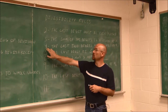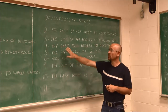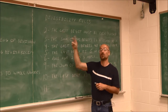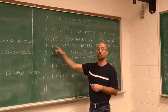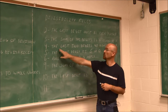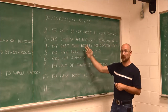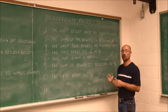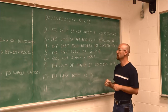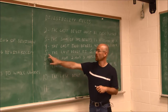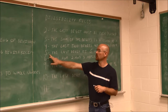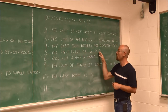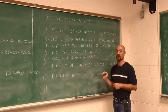For our divisibility rule of 4, we could think of it in two ways. It would have to be divisible by 2 twice because 4 is 2 times 2. But the rule says the last two digits of the number must be divisible by 4. If the last two digits are divisible by 4, then the whole number is divisible by 4. For 5, it's a simple rule: if the last digit is 5 or 0, the number is divisible by 5.